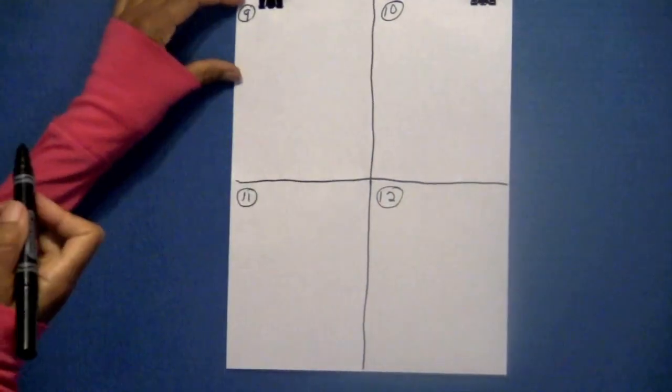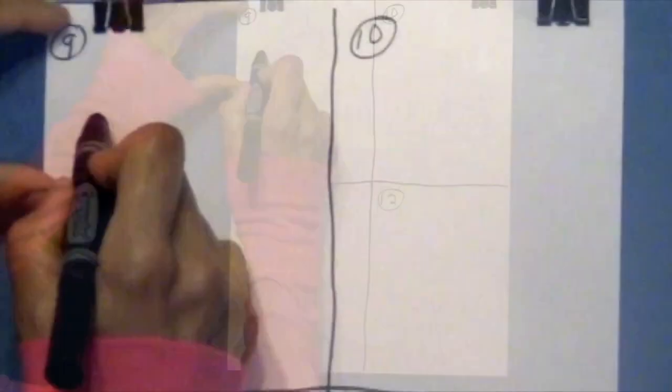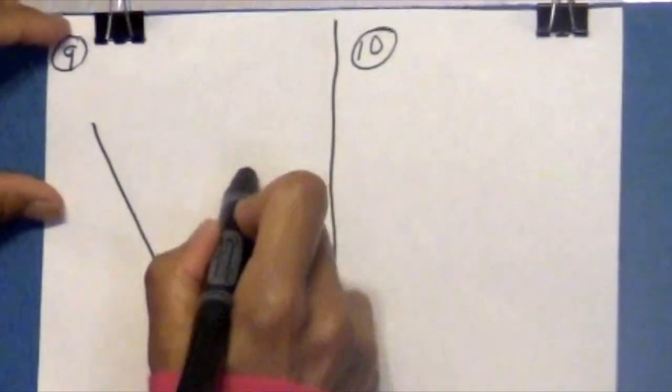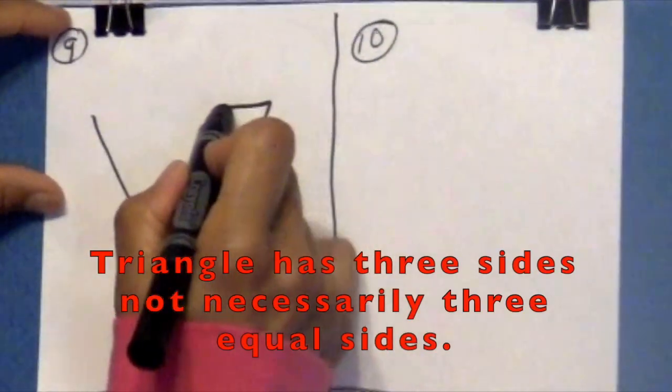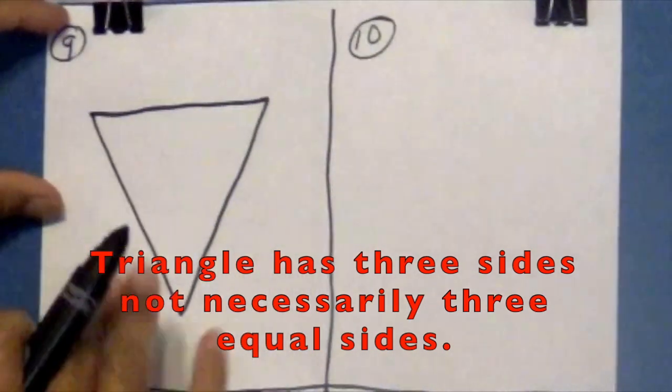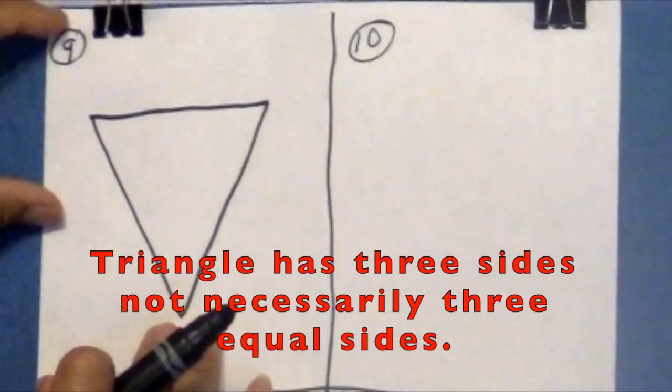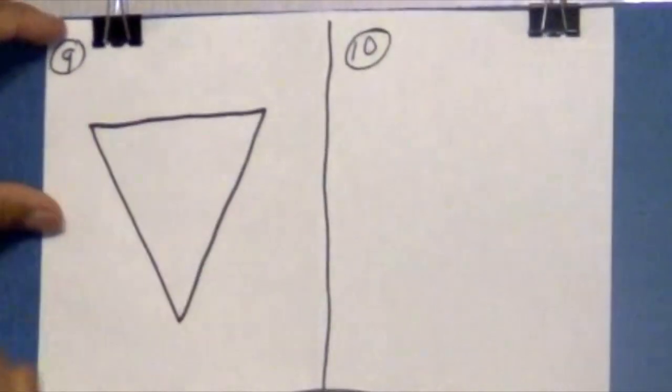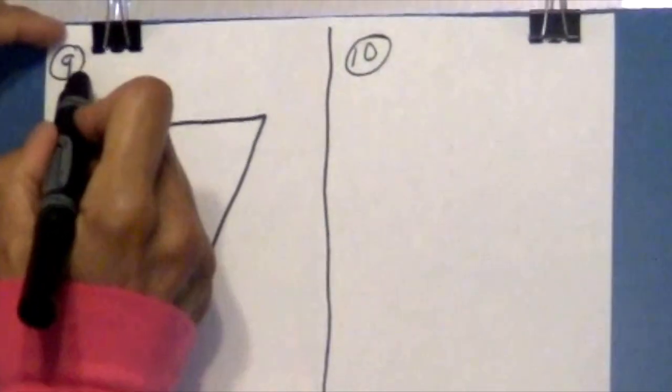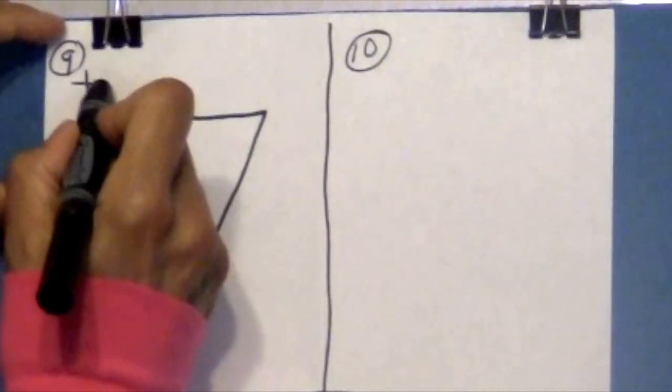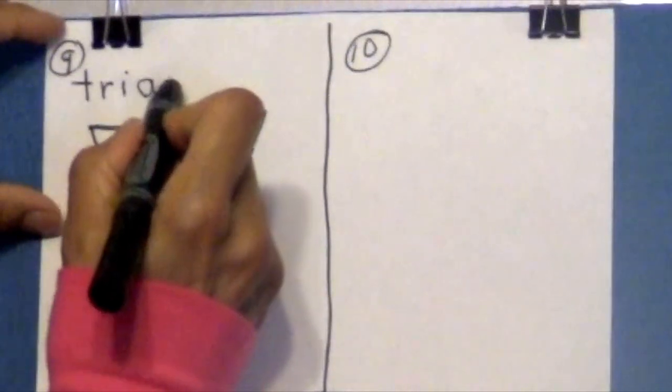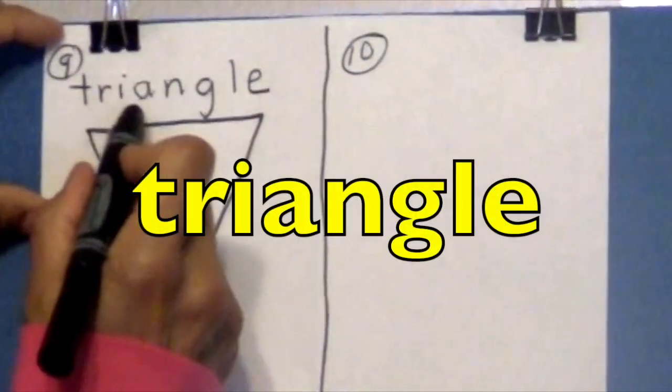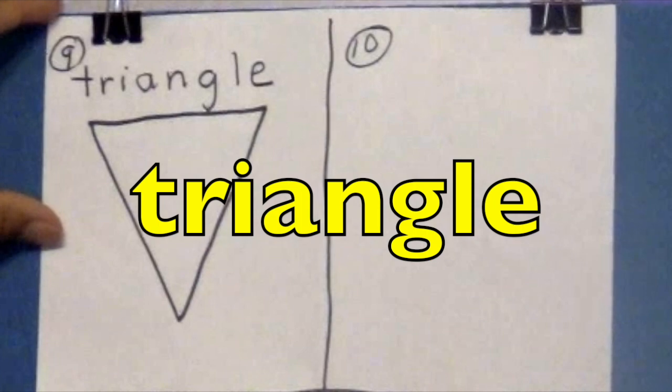The first number 9, we are going to draw a triangle again. Remember, a triangle has three sides. Not necessarily three equal sides, but we're going to make this one. I want you to make a triangle look like this. And how do we spell triangle? I want to hear you. And you're writing at your spelling. T-R-I-A-N-G-L-E. Triangle. Woohoo! Yay!